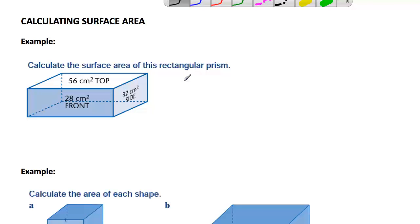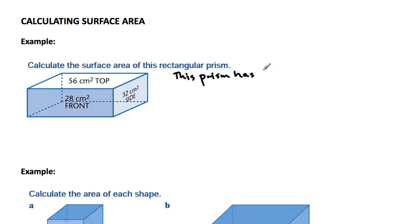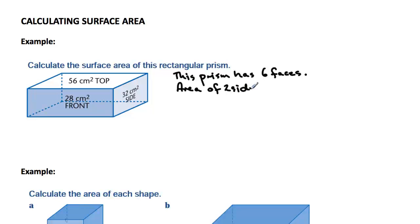If we look at this particular example, we're going to calculate the surface area of this rectangular prism. First of all we need to notice that this prism has six faces. So we've got to do six area calculations, or we can do less if there are equal faces on the shape, which in this case there are. We'll look at the area of two sides, which is two times 32 centimetres squared.